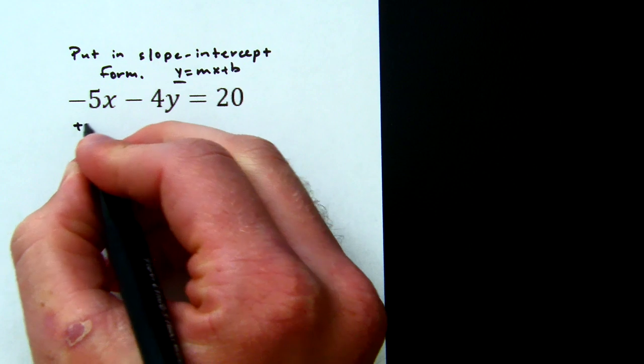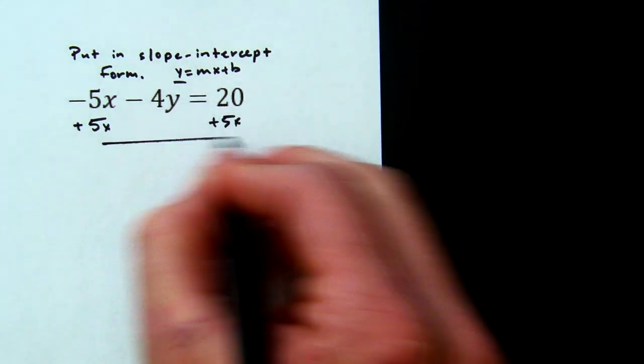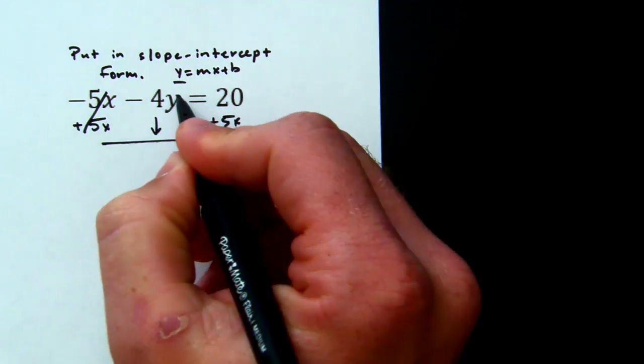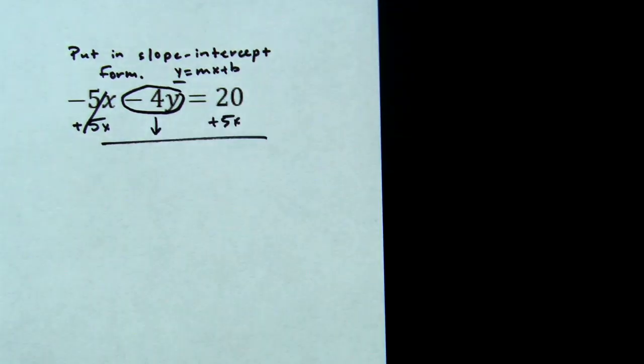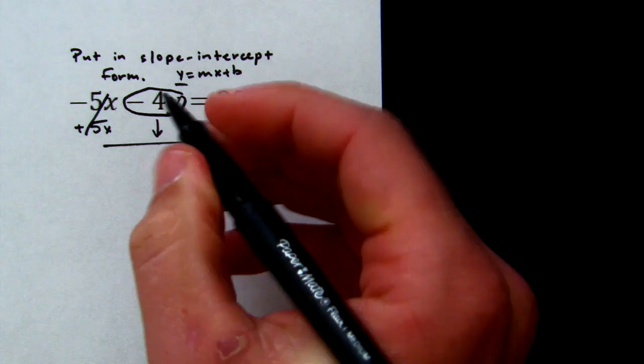The opposite of -5x is +5x, plus 5x. The -5x plus 5x cancels. We're going to drop down the -4y, and you've got to remember to drop the negative with it. Chances are you missed this one because you just dropped down a 4y.